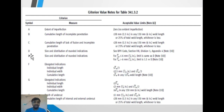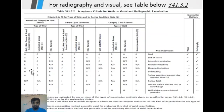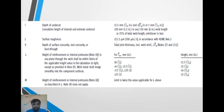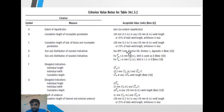Symbols D and E both refer to size and distribution of rounded indications, but D applies to longitudinal groove welds in severe cyclic condition, while E applies to normal category fluid service. For D, you must refer to ASME PCC or ASME Section VIII Division 1, Appendix 4. For E, the acceptance criteria come from Table 341.3.2 directly.